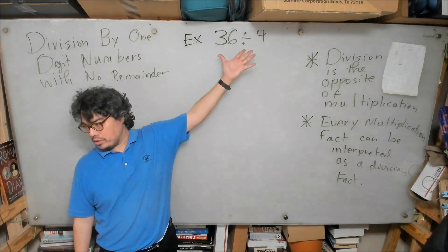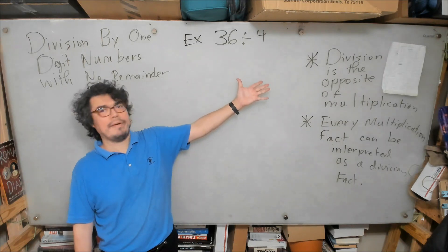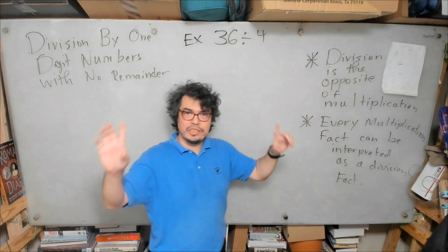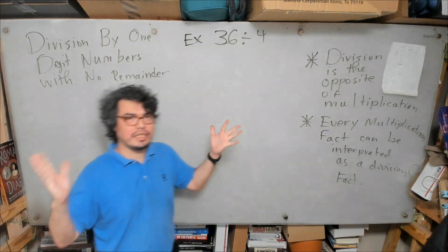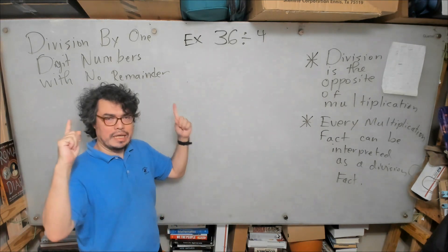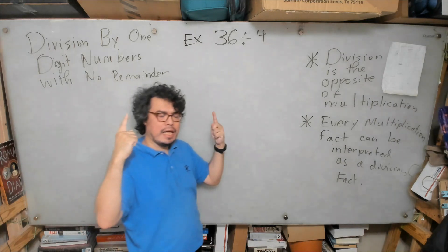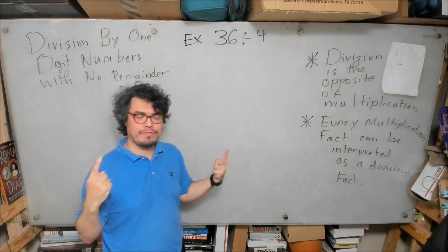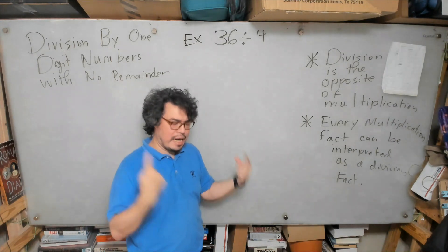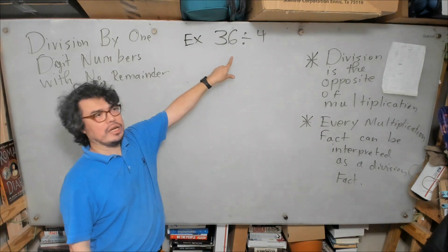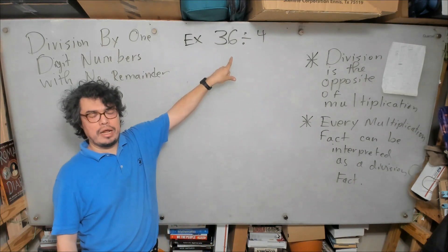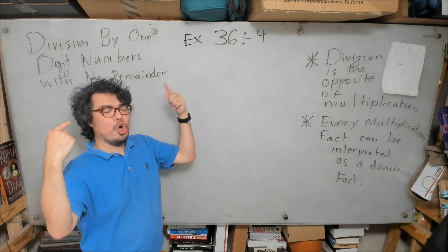Now let's look at this example together. What is 36 divided by 4? Or as we've seen in our previous examples, we could ask the question in our brain, keeping in mind that division is the opposite of multiplication, and keeping in mind that every multiplication fact we know can now be interpreted as a division fact.